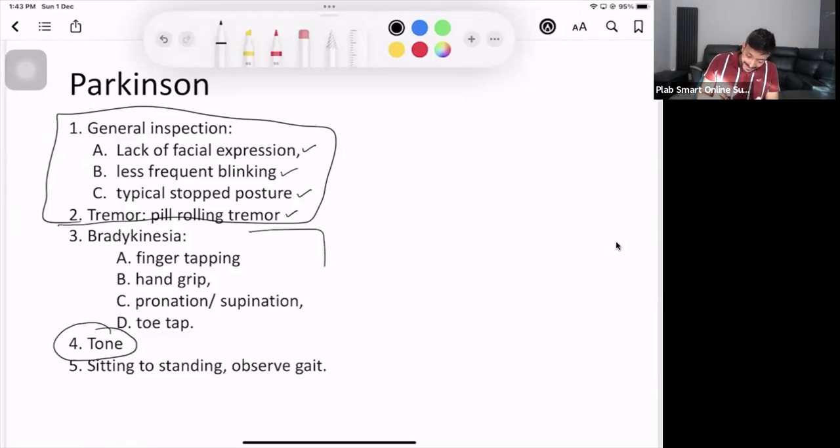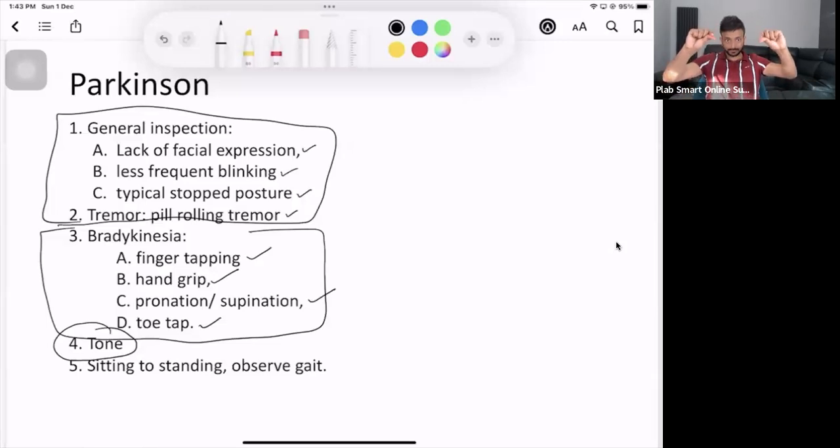Then you have got second thing, which is your bradykinesia. Bradykinesia is the slowness in the movement. We have got four options. Number one is finger tapping. Number two, hand grip. Number three, pronation, supination, and the toe tap. Do any one of it. Finger tapping, hand grip, pronation, supination, and then the toe tap. You just tap the toe on the floor. Choose any one of it and tell the patient to do it at least ten times. Either finger tapping or hand grip or pronation, supination or toe tap. Choose any one of it and tell the patient to do it at least ten times. And what you need to check? You need to check the slowness in the movement. That's it.